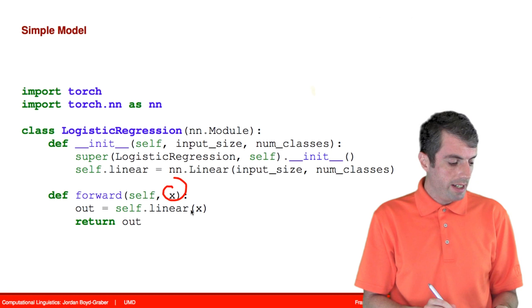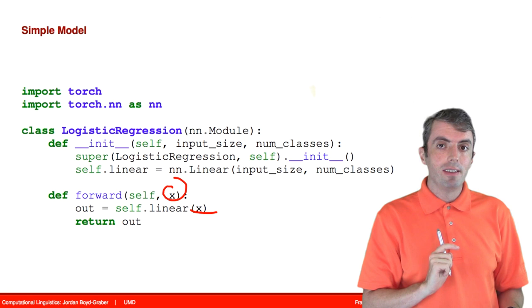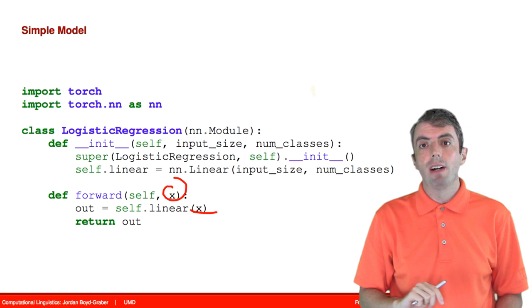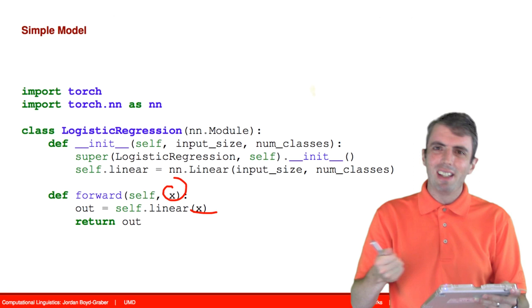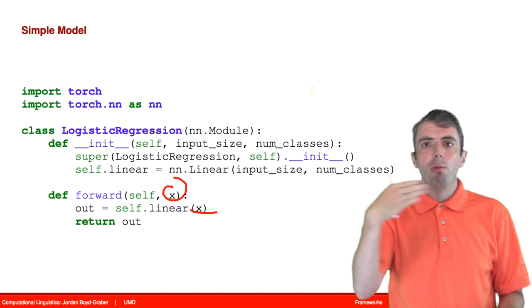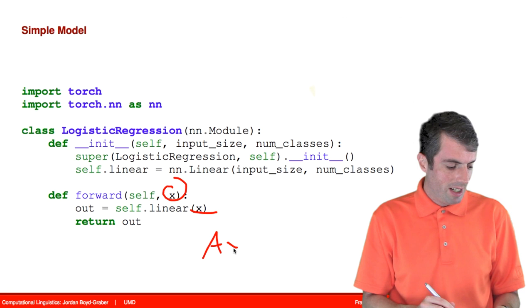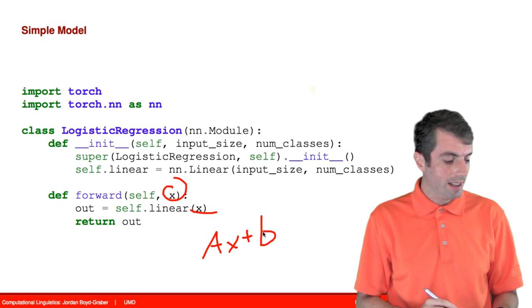So one thing that you may be noticing here, since this is doing logistic regression, is where is the softmax function? Where is the pass into the logistic function? That isn't happening yet. That will happen later once we define the loss function. So these things get a little confusing when you're combining loss functions with the parameters. But the loss function will be implicitly defined once we incorporate the loss function. But in this case, we're just taking some linear operation, applying it to an input vector, and adding in a bias. That's all that this class is doing.